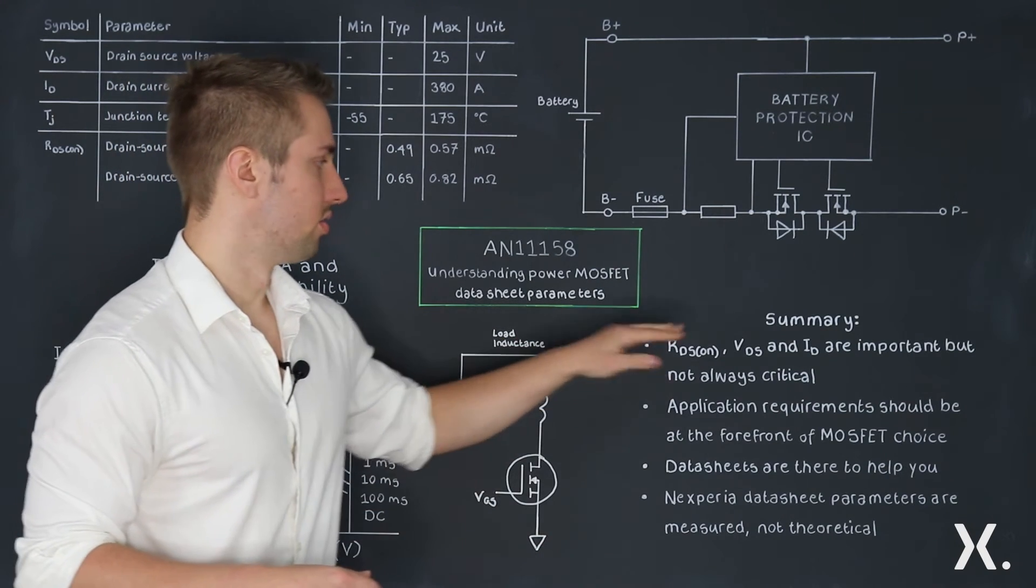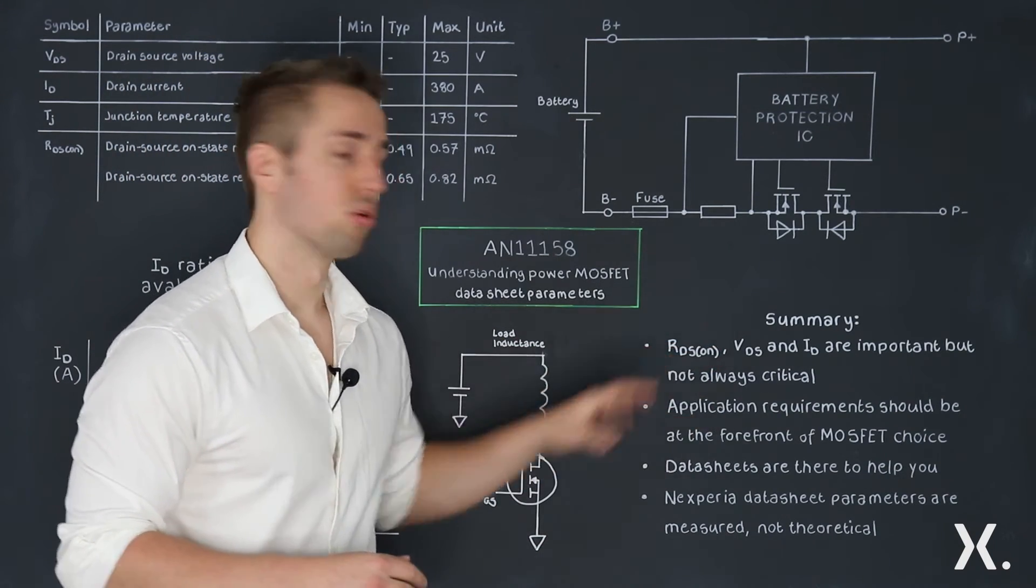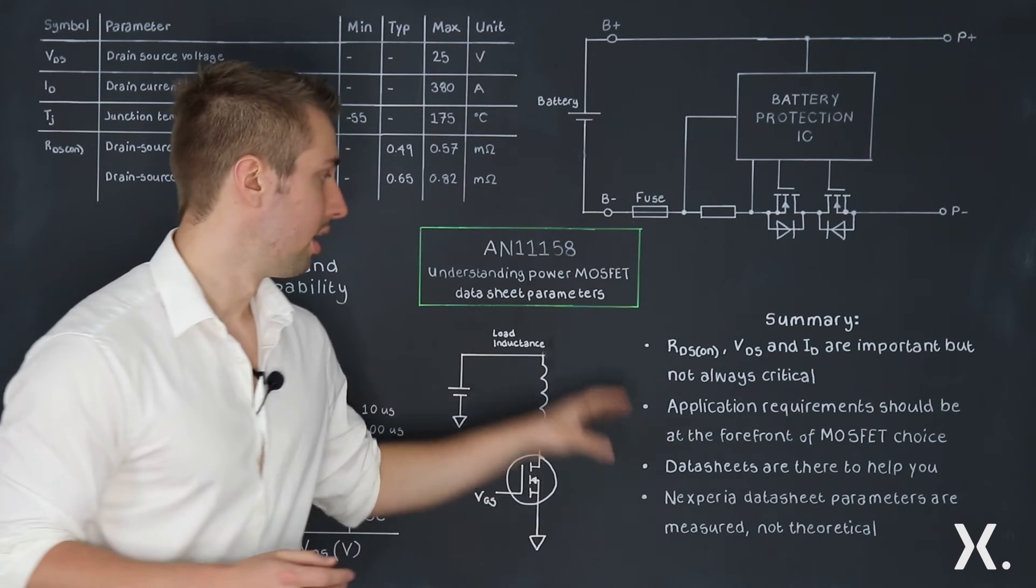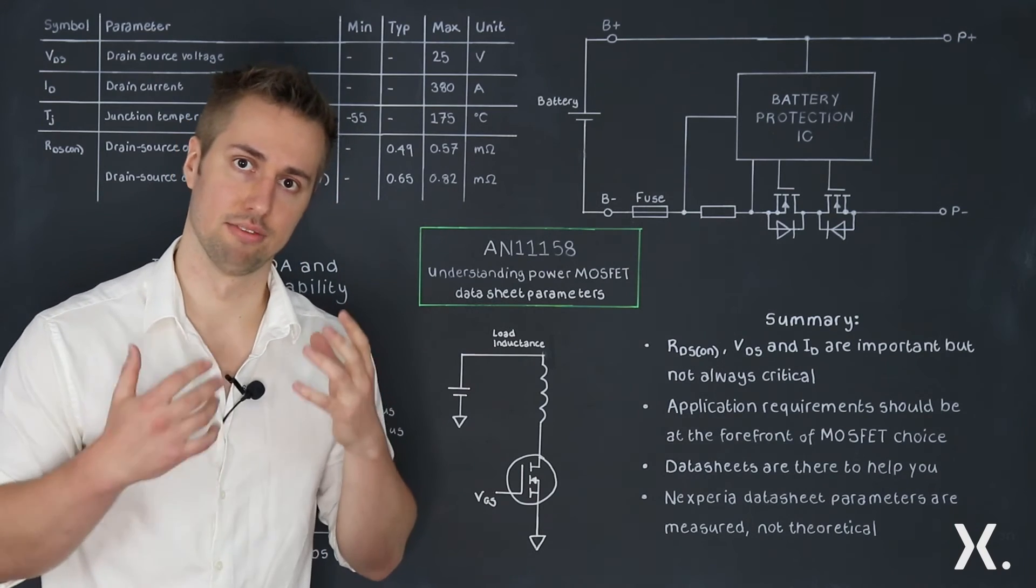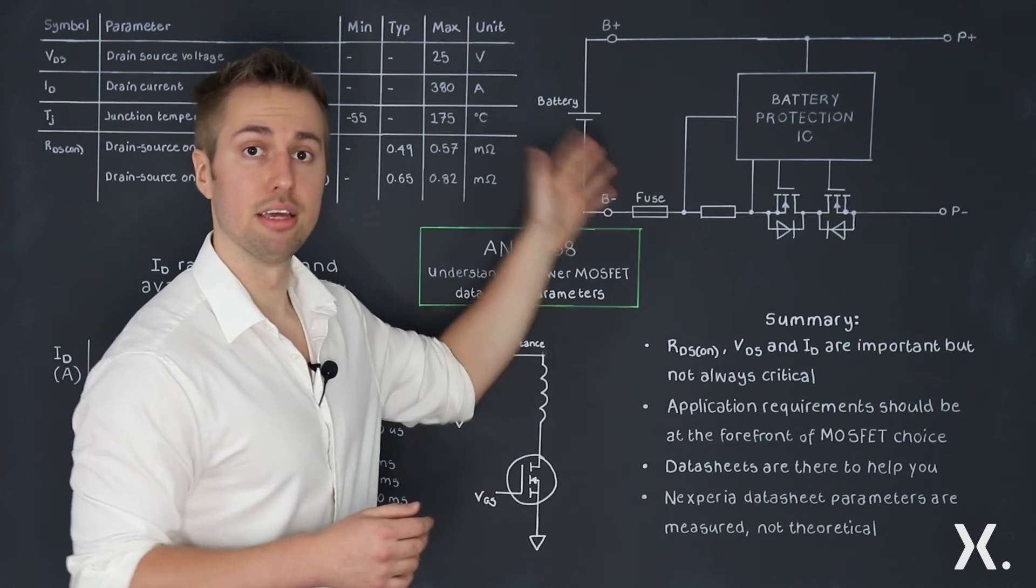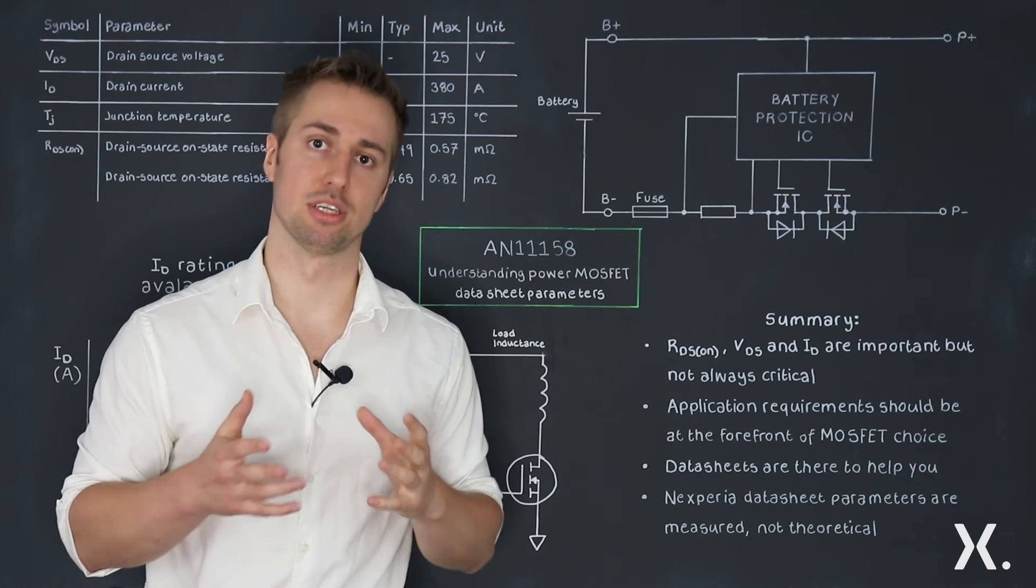Now, RDS on, drain source voltage, and ID are important, but they're not always critical. Application requirements should be at the forefront of MOSFET choice. In this video we've been discussing e-fusers, however there are many other applications which will have different sets of parameters which can become more or less important.